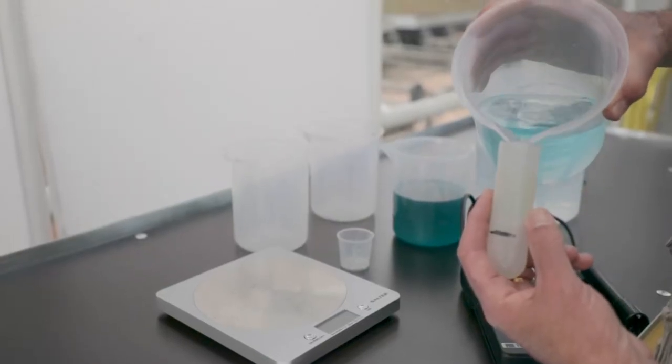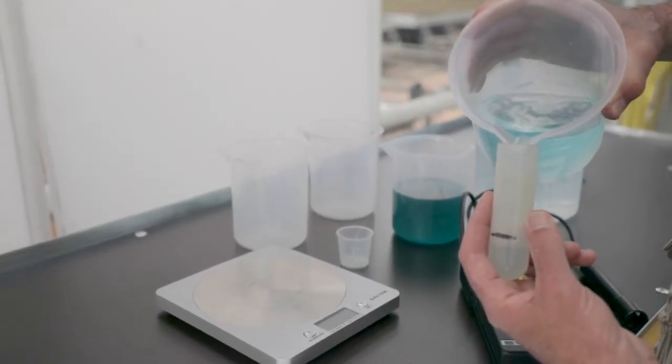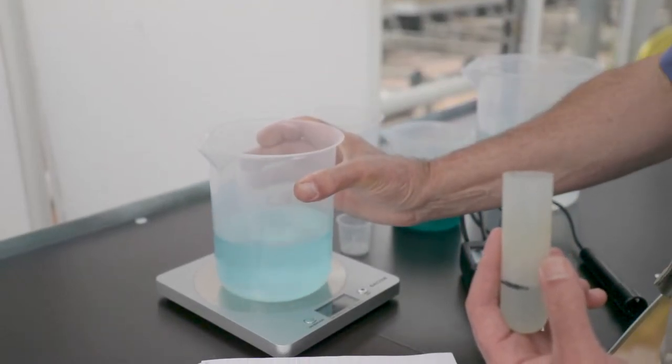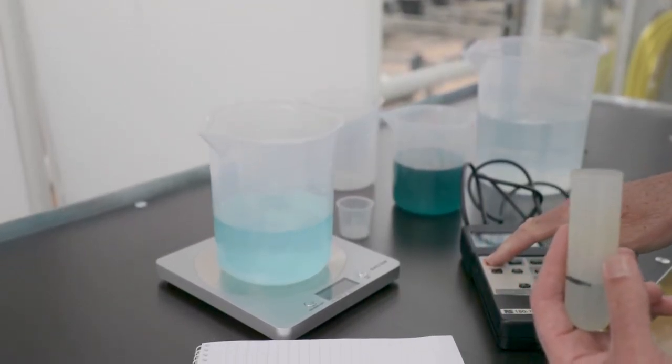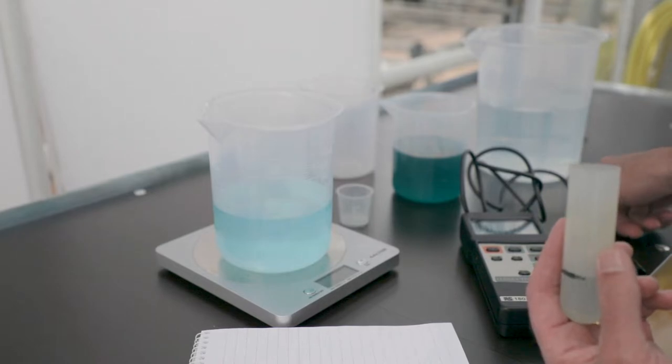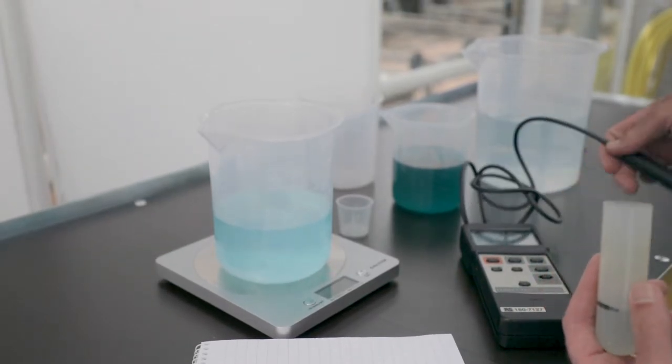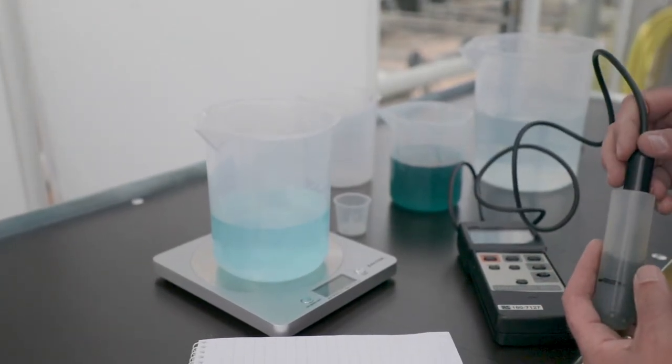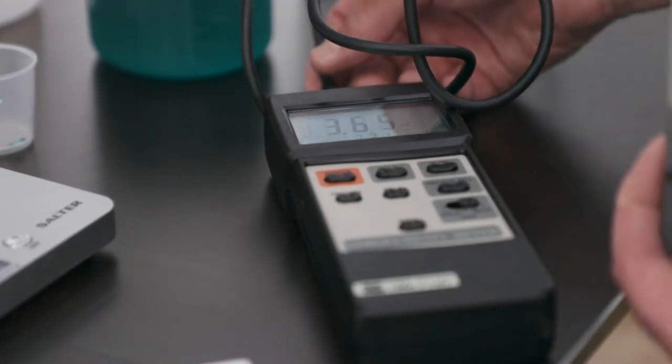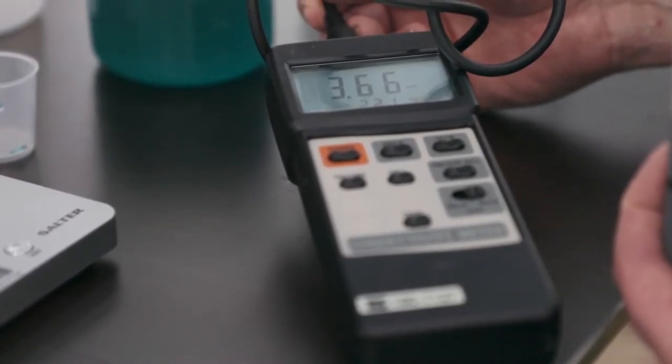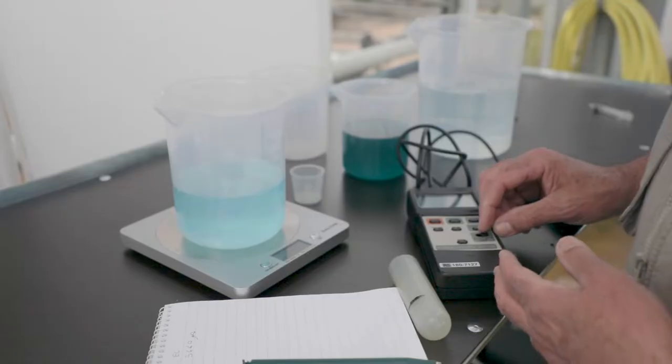We now have a one in fifty diluted solution and what we're going to do now is just measure the conductivity of this solution which will give us our first calibration point. Take a small amount of the actual diluted solution. This gives us a reading of three thousand six hundred and sixty microsiemens and that's your most concentrated level.